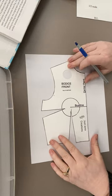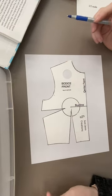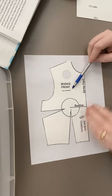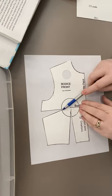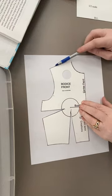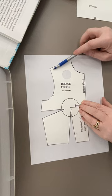The first thing we need to do is move a dart. I'm going to be using the female sloper with the dart on the bust line, and I want to end the princess line up here in the shoulder.